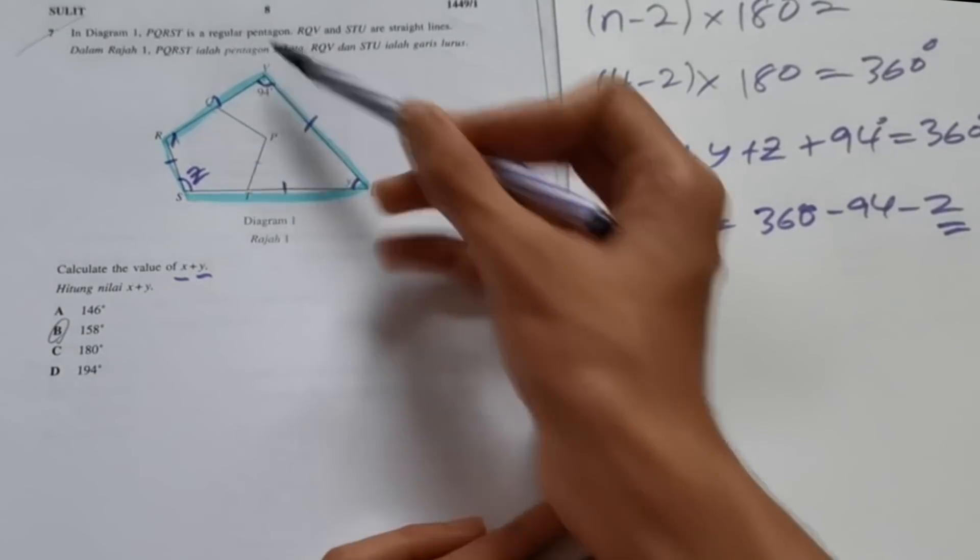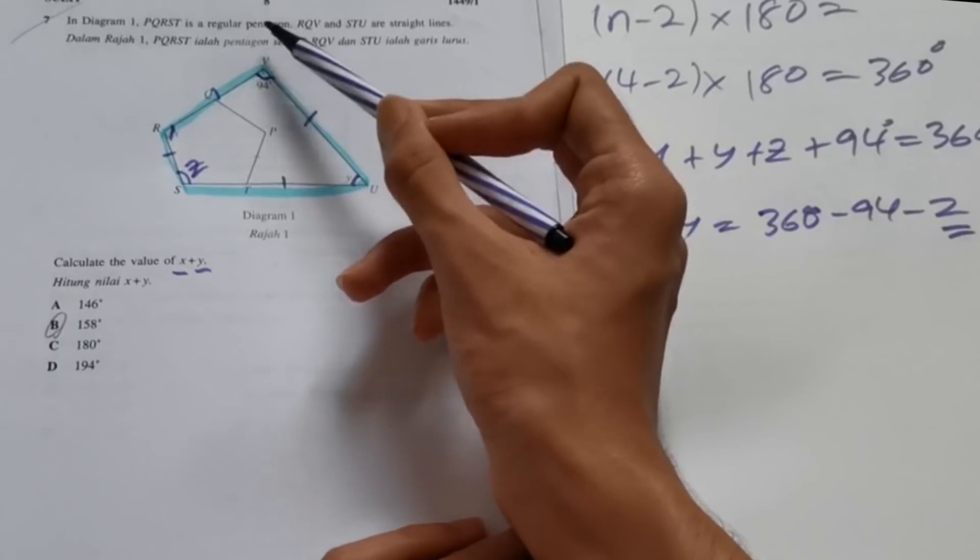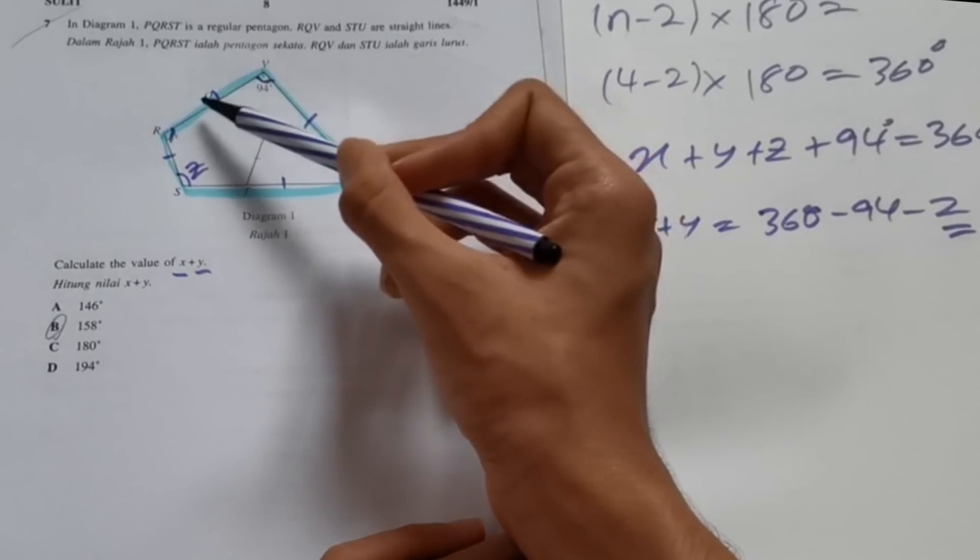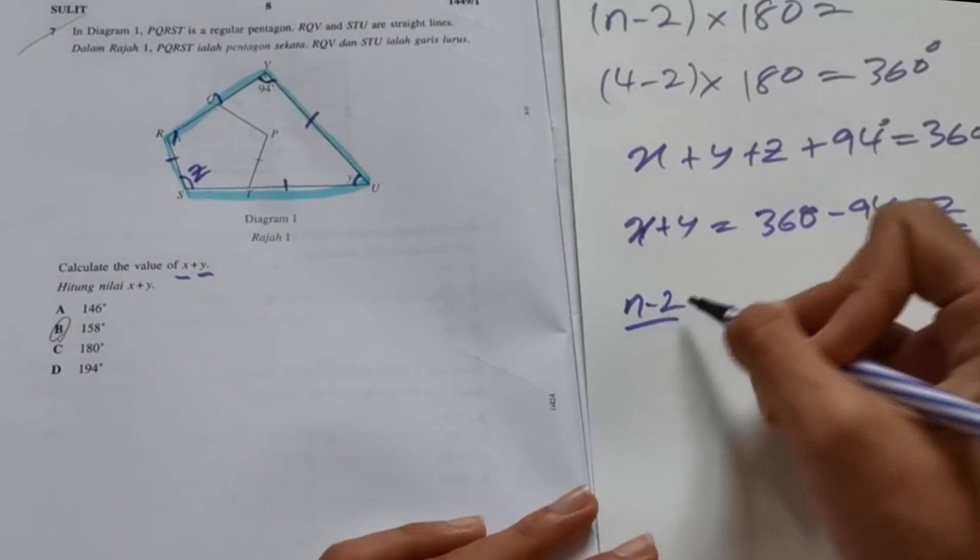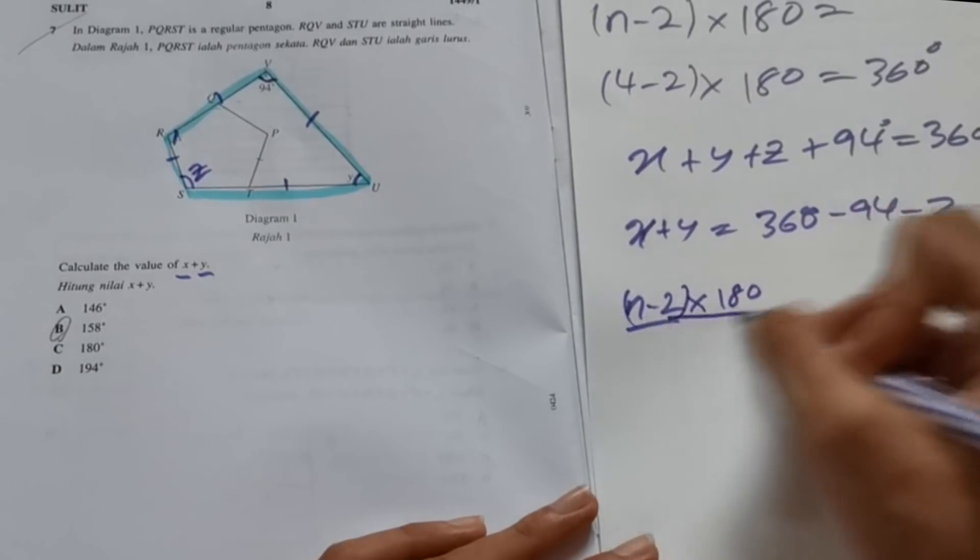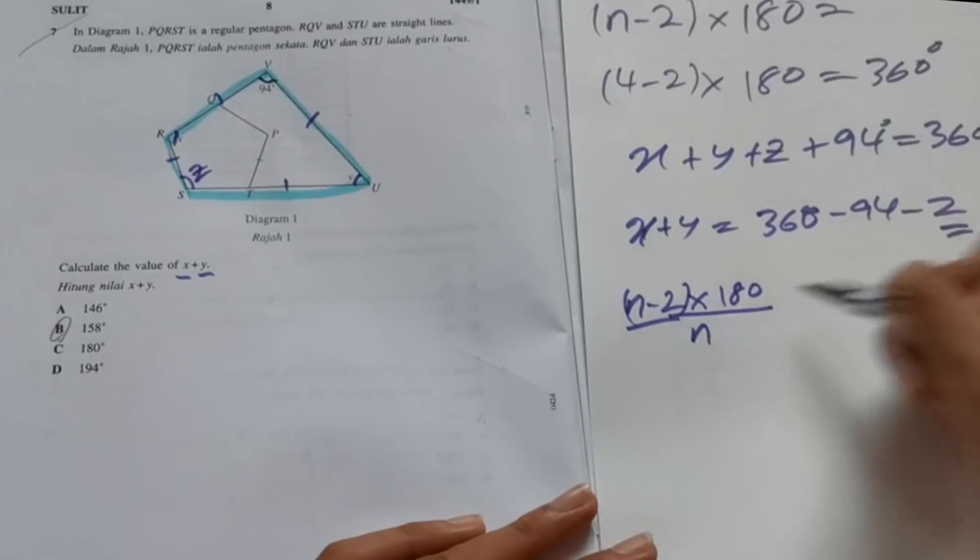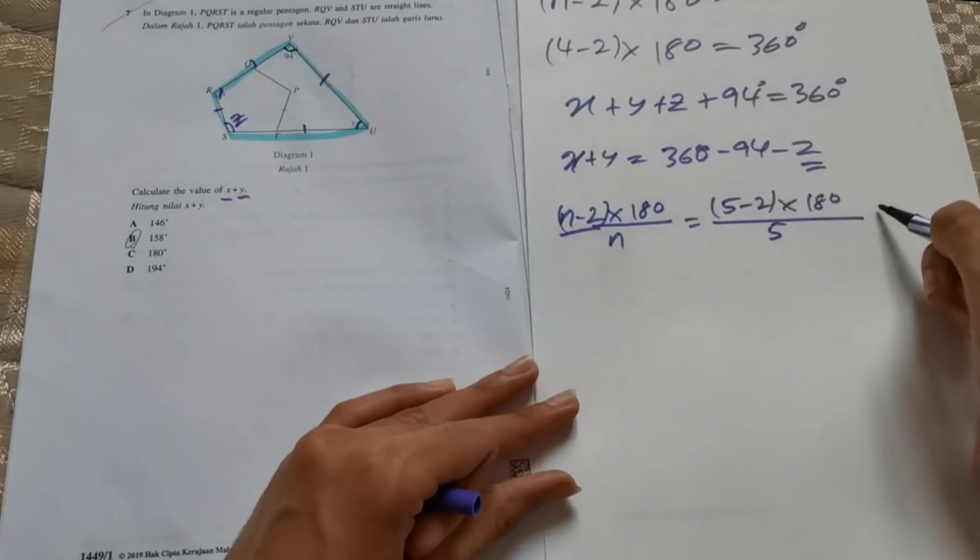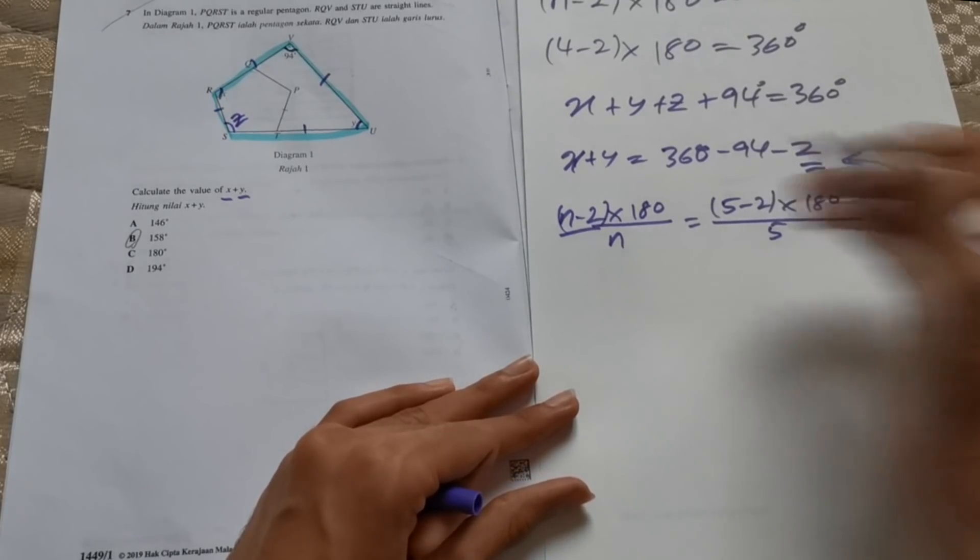z is one of the angles of a regular pentagon. Regular pentagon means that all sides are of the same length, which also means all the angles are the same. So for this, we use the formula n minus 2 times 180 over n. So 5 minus 2 times 180 over 5. If you type this in the calculator, you'll get 108 degrees.